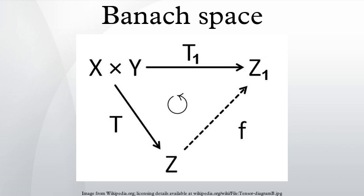Then there exists a linear functional f: X → K such that f extends φ. In particular, every continuous linear functional on a subspace of a normed space can be continuously extended to the whole space, without increasing the norm of the functional.